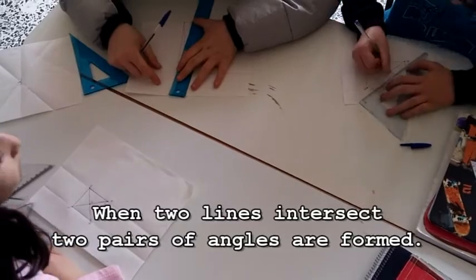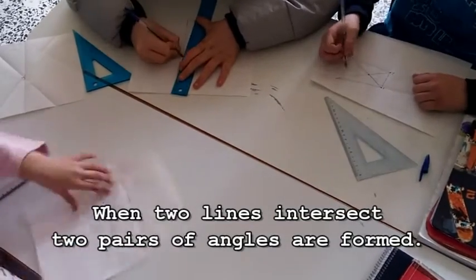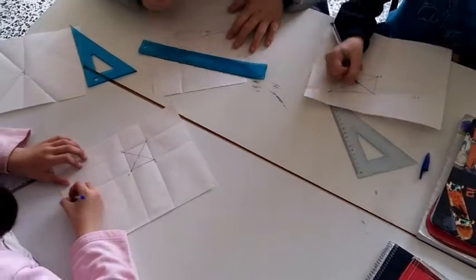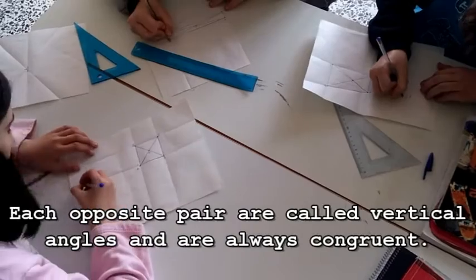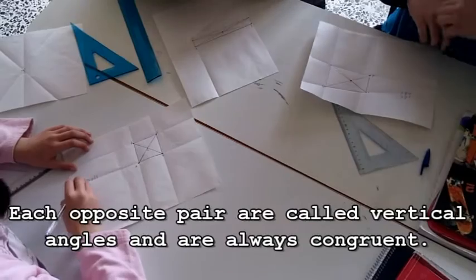When two lines intersect, two pairs of angles are formed. Each opposite pair are called vertical angles and they are always congruent.